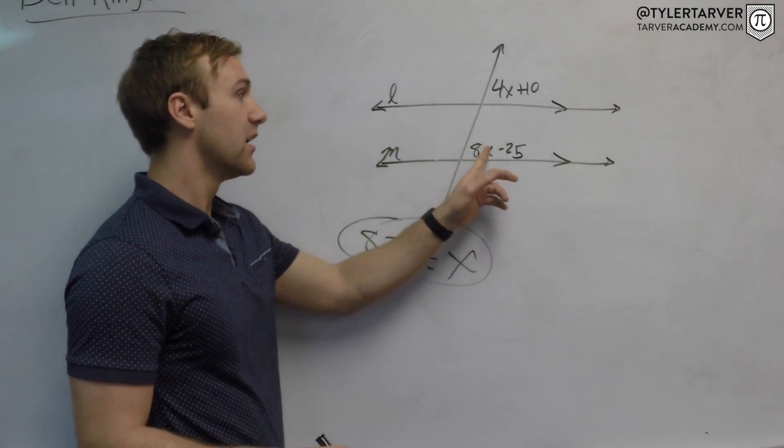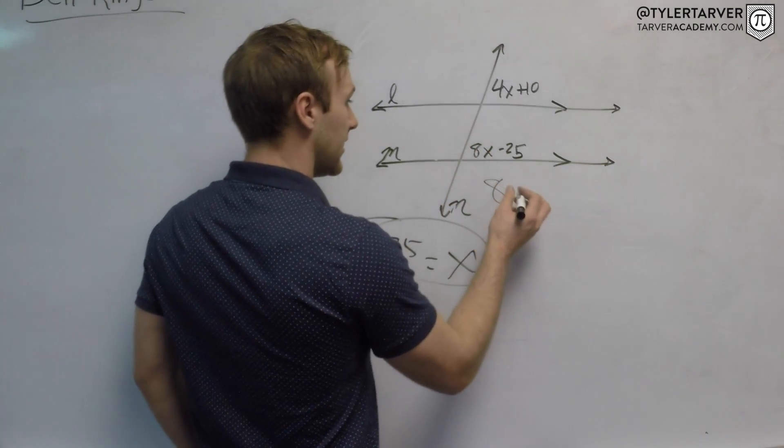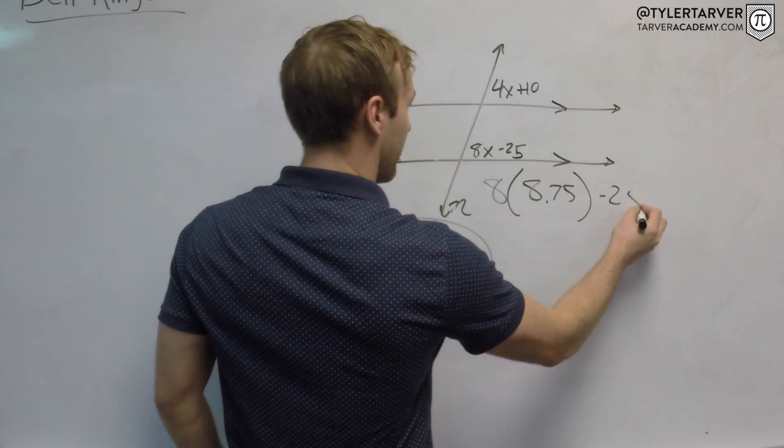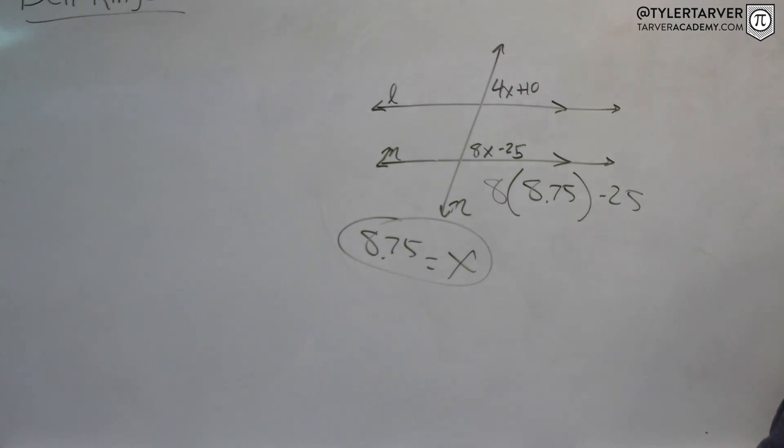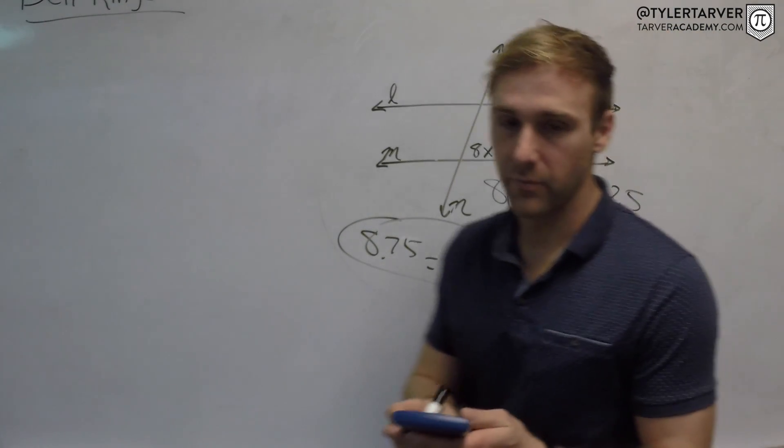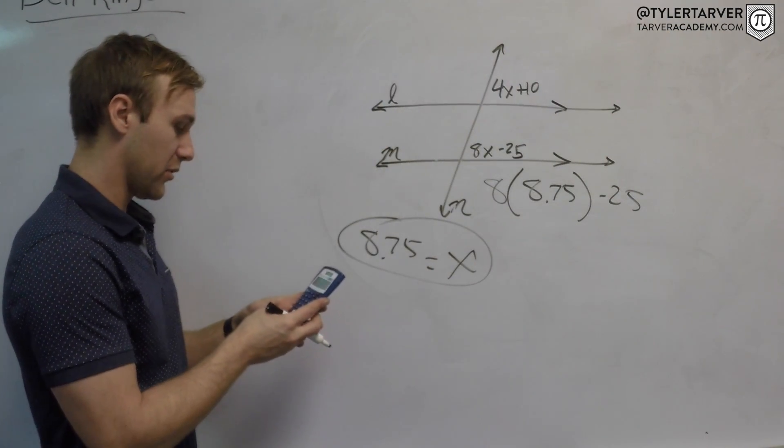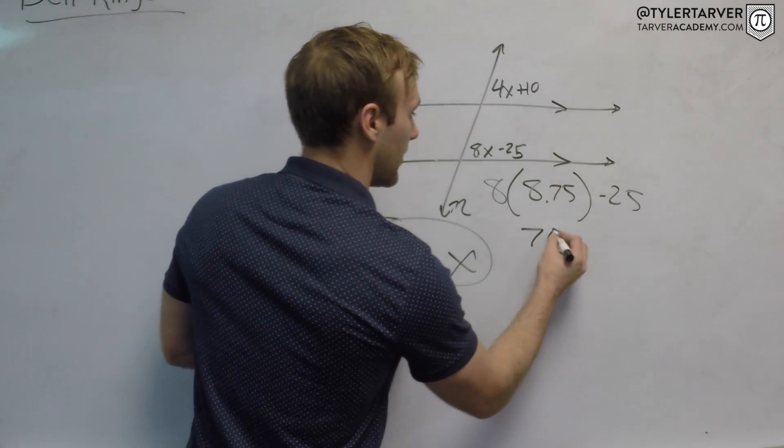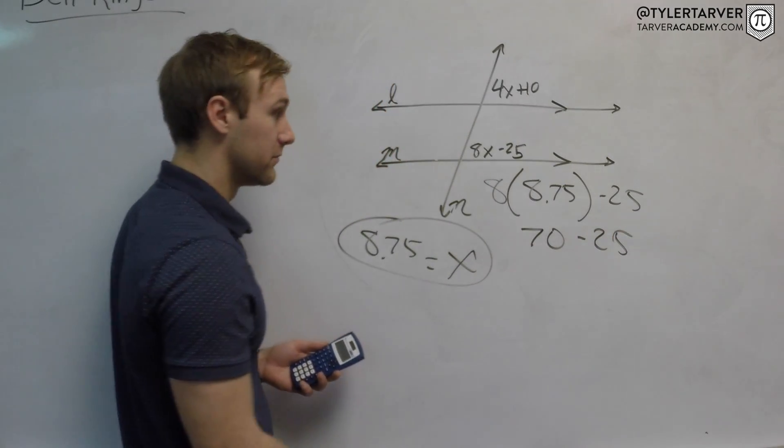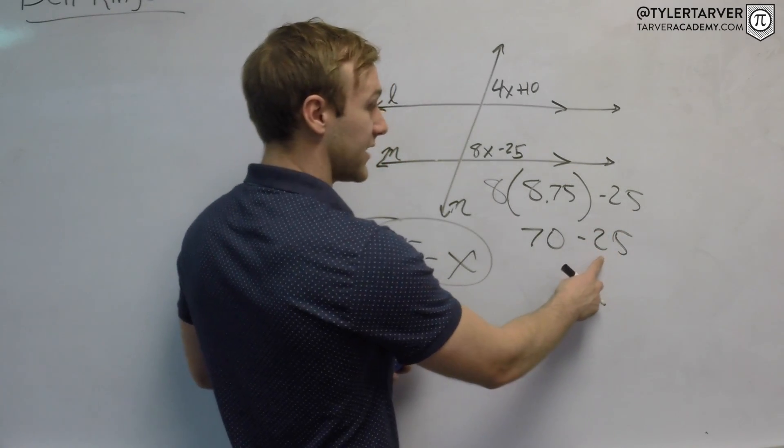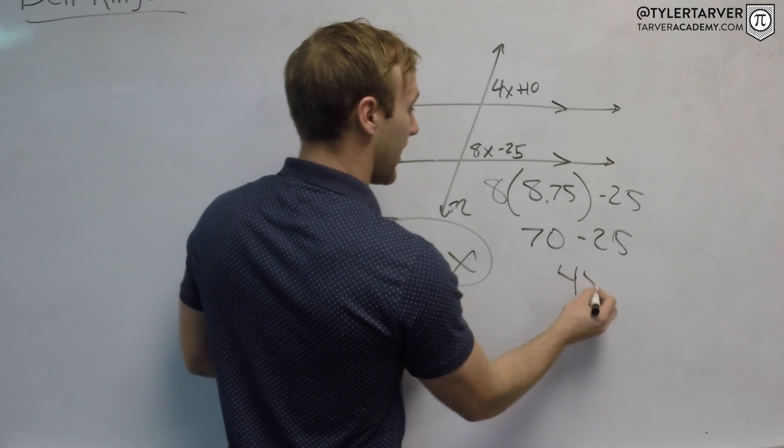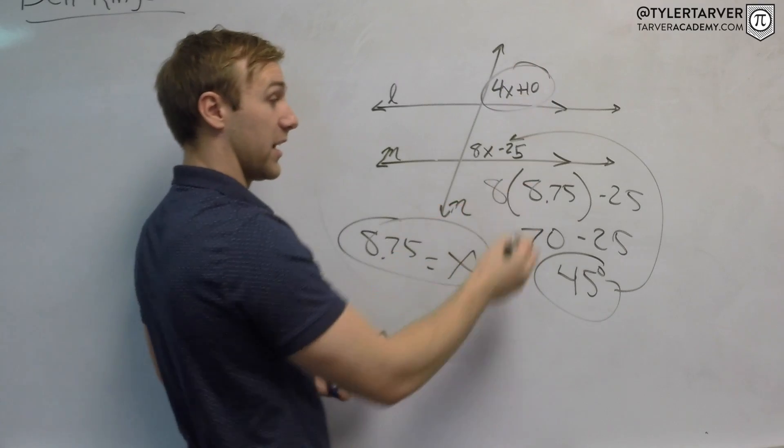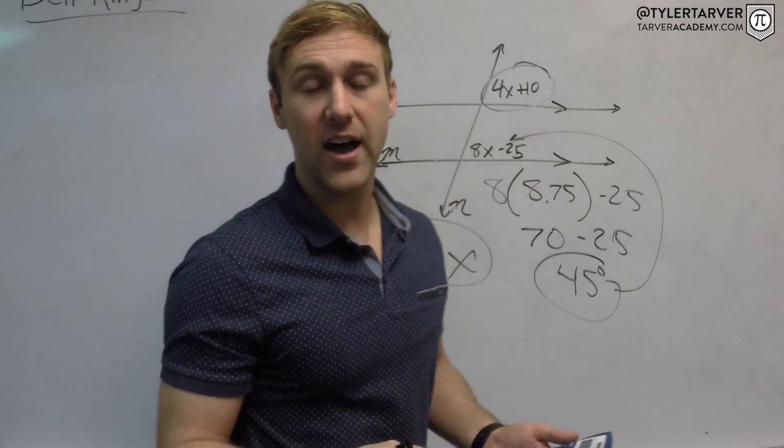So it'll be 8 times 8.75 minus 25. I'm going to use a calculator - if you have a calculator, you can race me. Ready, go! 8 times 8.75 is 70. Did you win? Great job! And then we do 70 minus 25, which is 45. So that is a 45 degree angle. What would this angle be? 45, because they're equal.